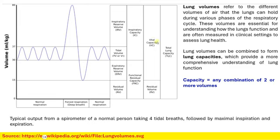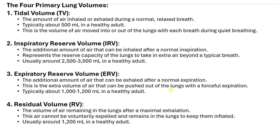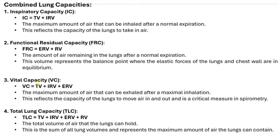The important parameters we can measure are inspiratory reserve volume, tidal volume, expiratory reserve volume, and vital capacity. Vital capacity plus residual volume gives us total lung capacity. These parameters provide information about lung physiology. From the three measurable volumes — tidal volume, inspiratory reserve volume, and expiratory reserve volume — we can calculate all the other lung capacities using their combined equations.